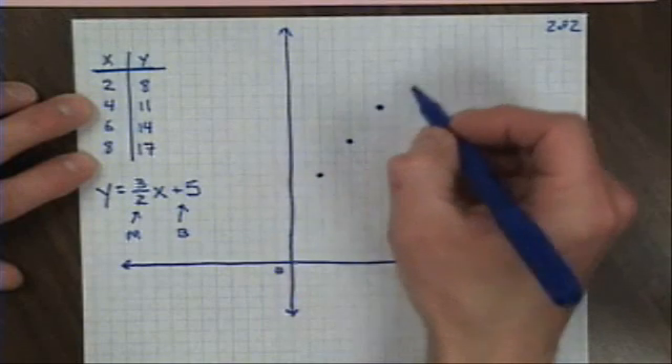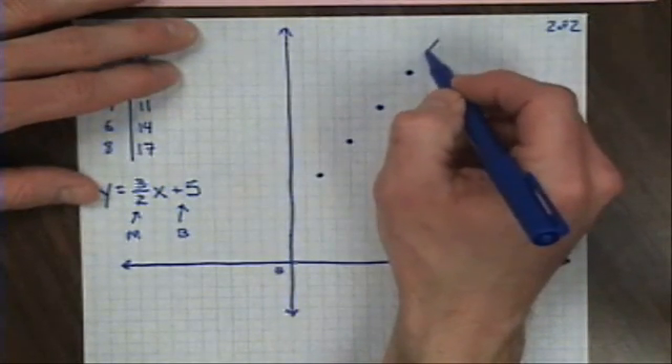If I graph the points that were given to me, 2, 8 is right here, 4, 11 is right here, 6, 14, and 8, 17. And what you'd notice is if I graph these things, and if I can graph them as carefully as possible here.